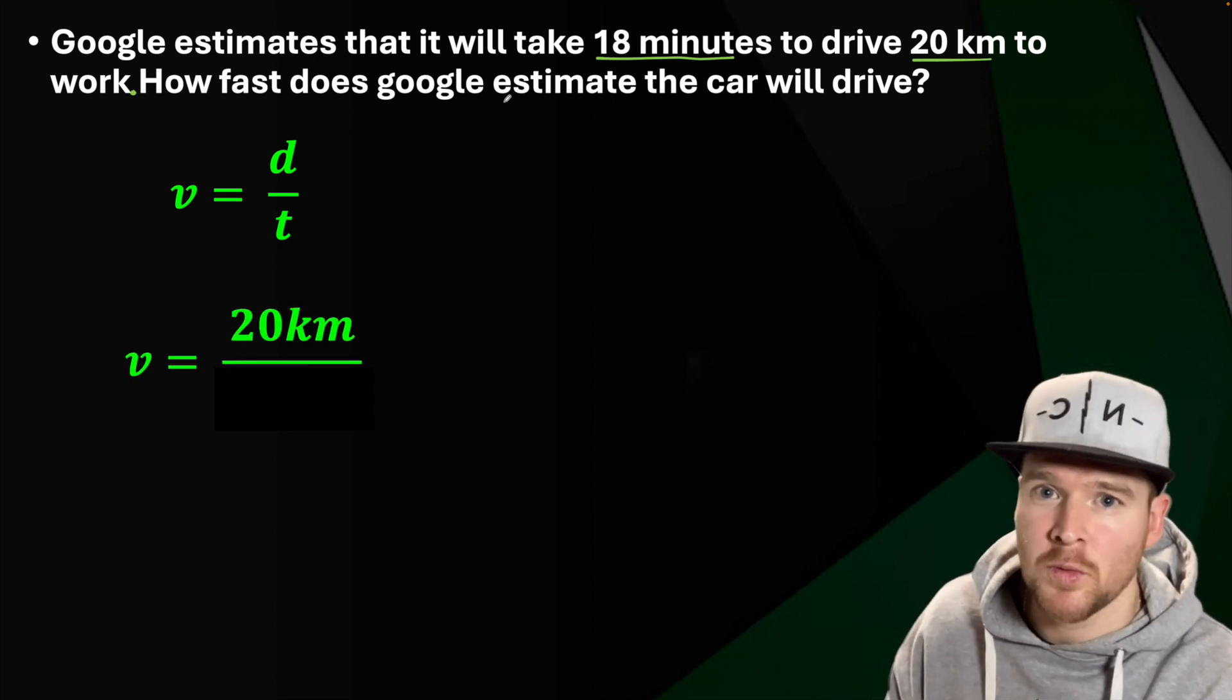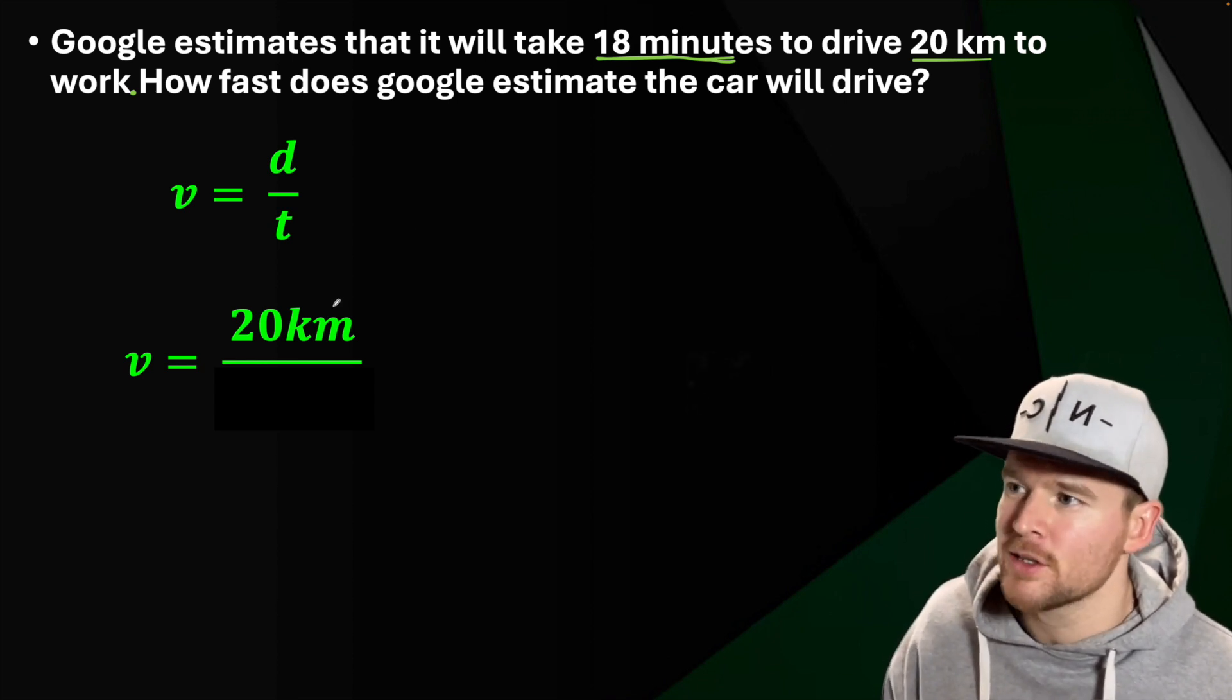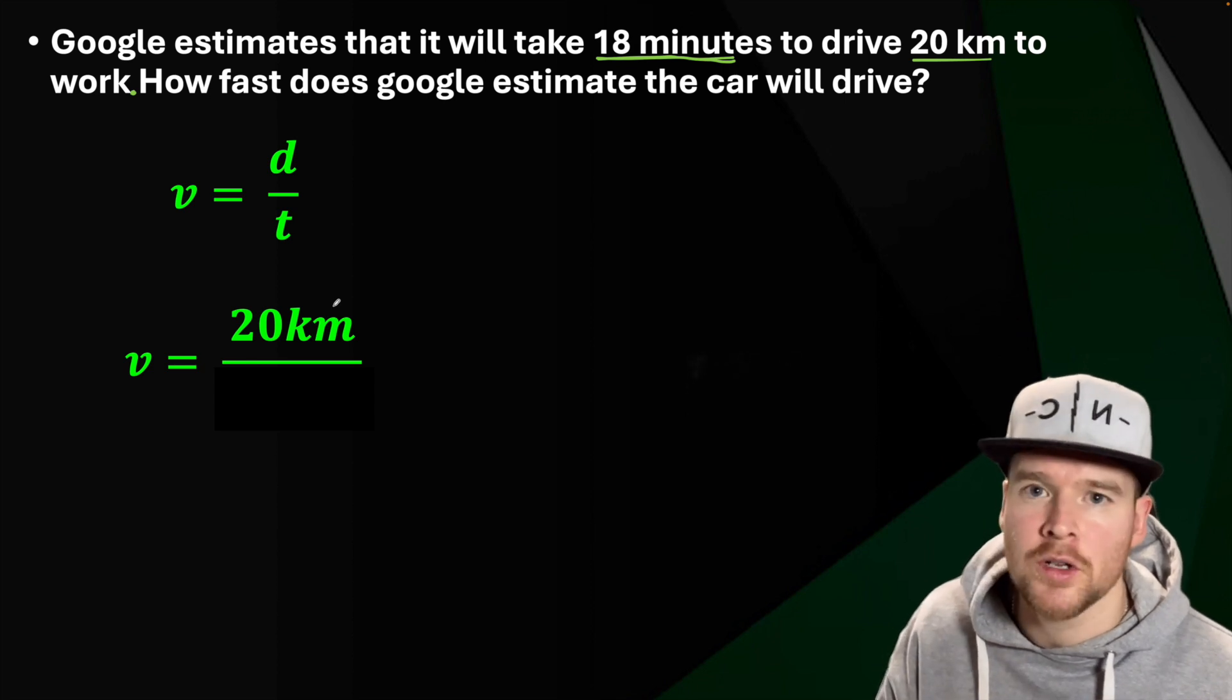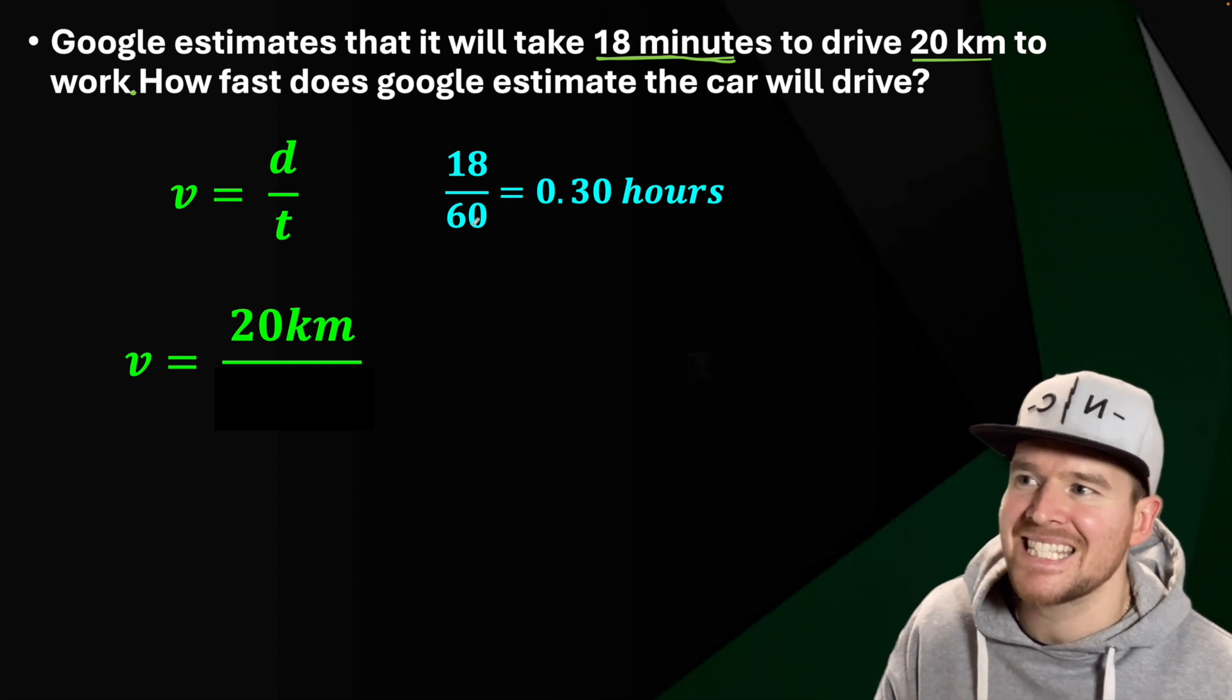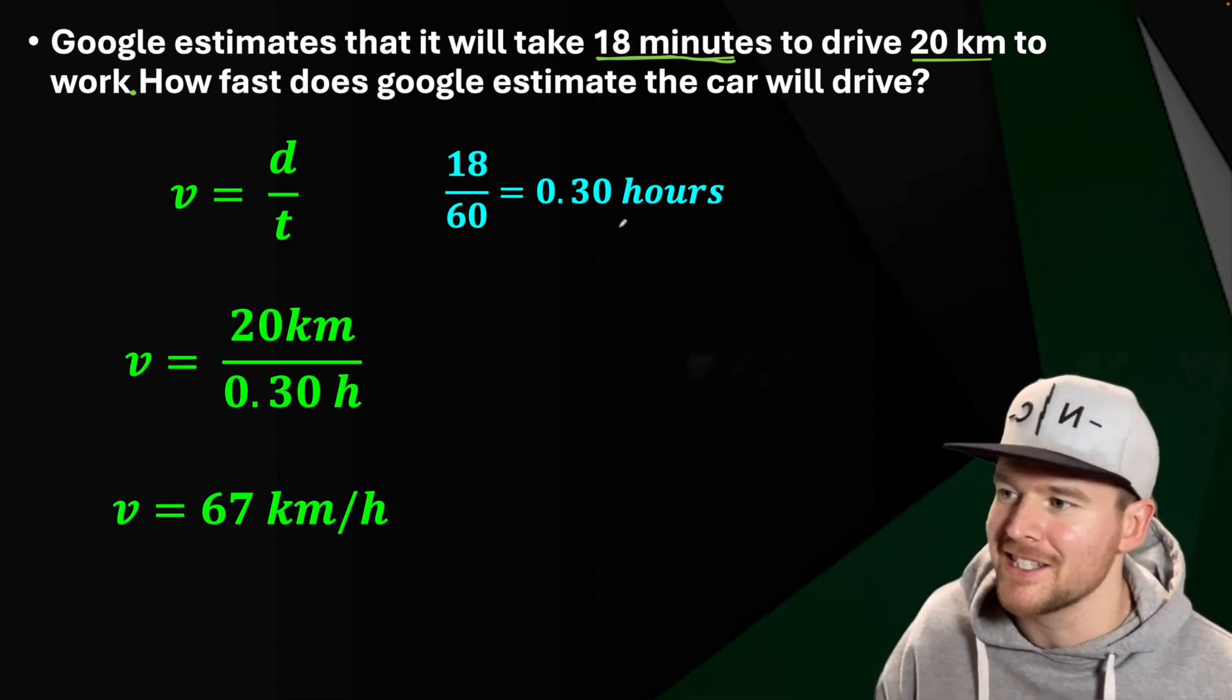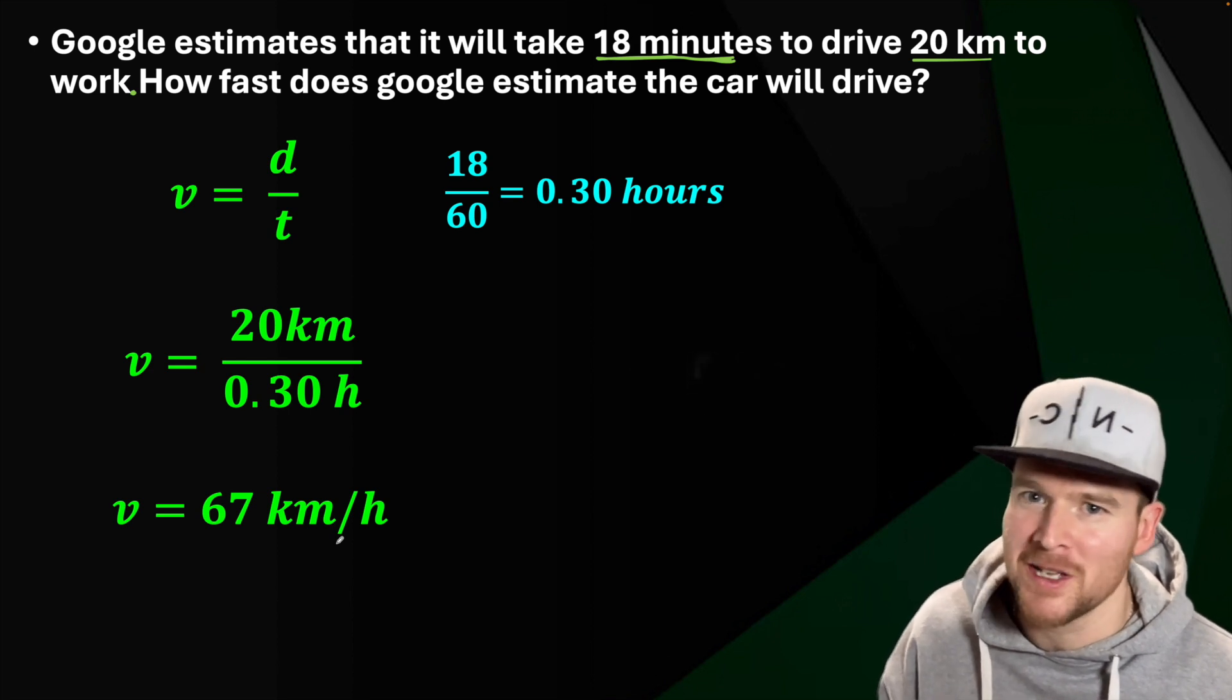We're going to plug in a distance of 20 kilometers divided by our time. But when I look at my time, I have 18 minutes. If I divide by 18 minutes, I'm going to get kilometers per minute, which is not a common unit. We should do kilometers per hour. So let's convert 18 minutes into hours. There's 60 minutes in an hour, so 18 out of 60, we'll just divide them and get 0.3 hours. So we're going at 67 kilometers per hour.